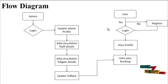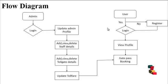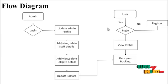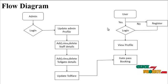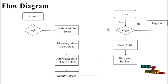Let's see the admin process step by step. The admin module manages the Tollgate process, containing the following Tollgate details. Admin can add and delete Tollgate details, including Tollgate name, Tollgate location, postal code, mobile number, email ID, Tollgate image, and also add staff details.